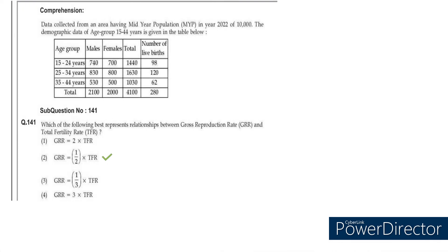Now we will solve the previous year questions. These are questions from the 2023 December paper. In the first question, they are asking us to find the relationship between GRR and TFR. We have already discussed that in most circumstances, GRR is equal to half that of TFR. So it is option 2.